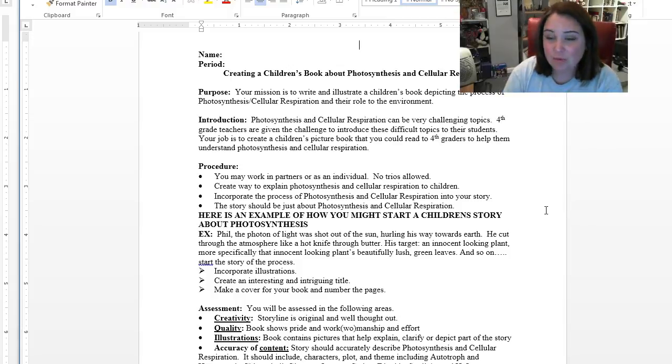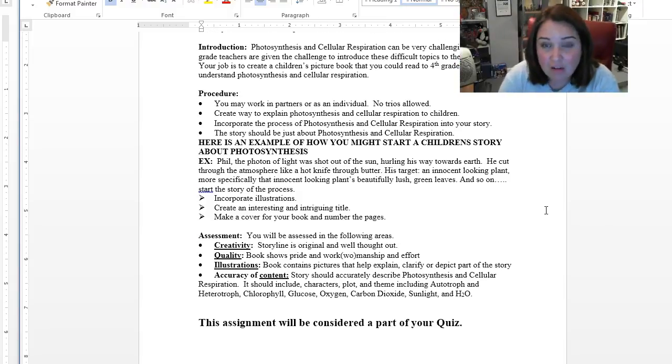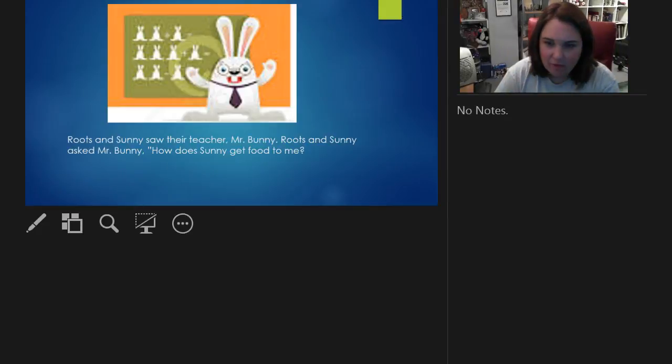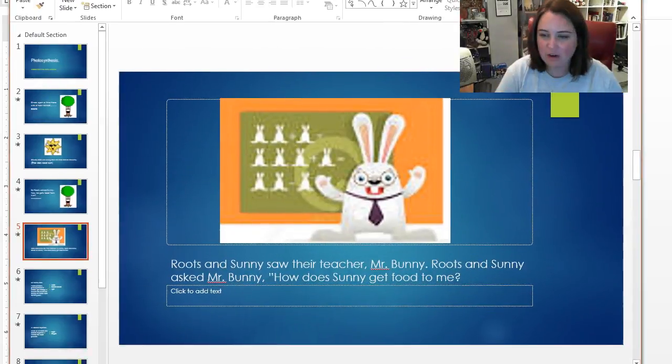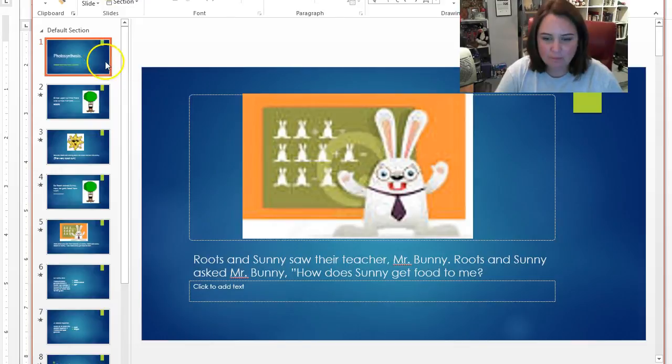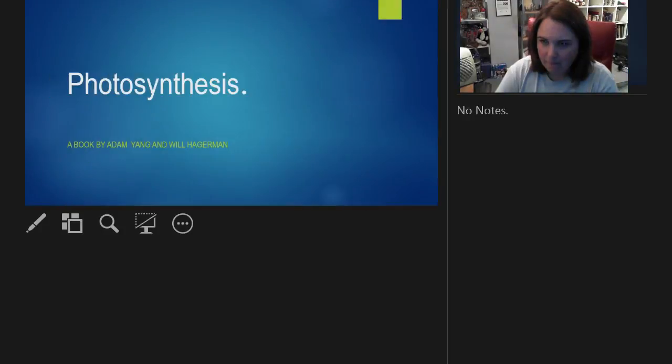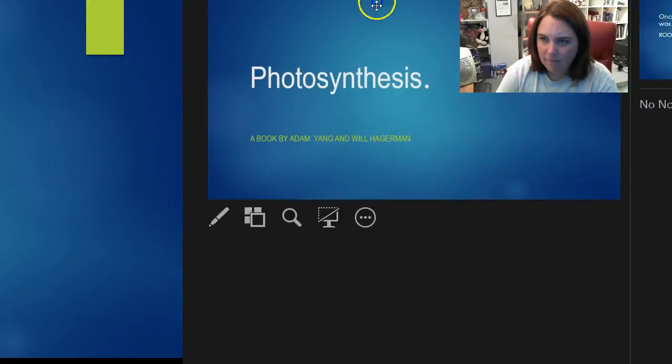He cut through the atmosphere like a hot knife through butter. His target, an innocent-looking plant. More specifically, that innocent-looking plant's beautiful, lush green leaves and so on. So you could take that story start and go with it, or you can kind of make your own. You'll be scored on being creative, making it something that has a little bit of quality to it, having illustrations, and, of course, the accuracy. Did you really talk about photosynthesis? Now, I have a kind of a silly one right here that a group did last year.